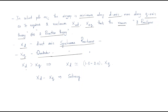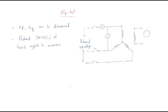Generally, Xd is greater than Xq. The direct axis reactance is more than the quadrature axis reactance, with Xd equal to 1.5 to 2 times Xq. The difference between Xd and Xq is called the saliency. Both Xd and Xq can be determined by the slip test — the slip test is used to find out the direct axis reactance as well as the quadrature axis reactance.